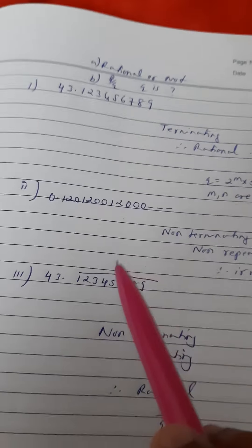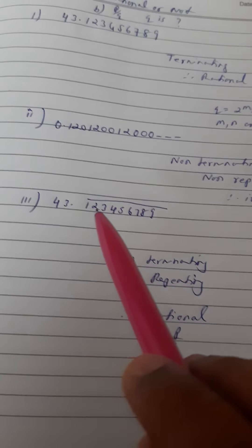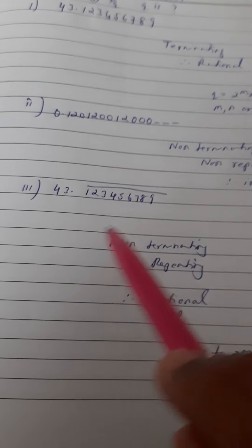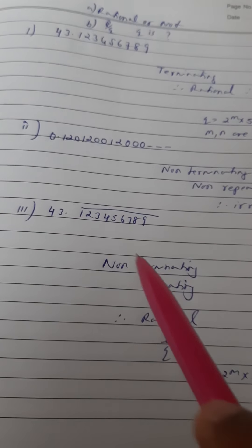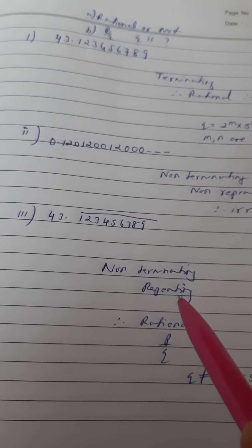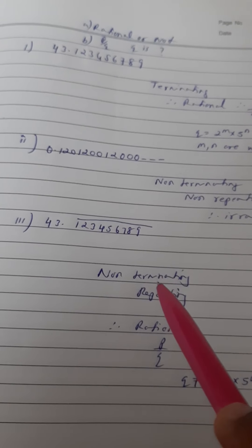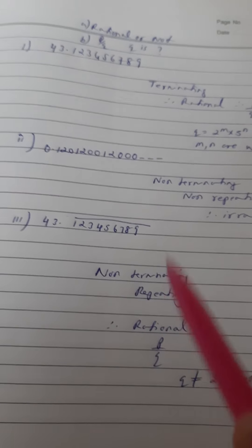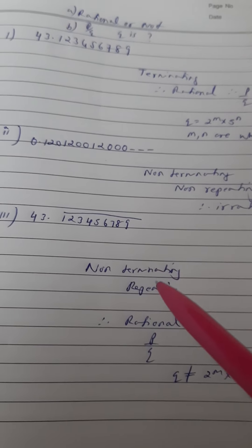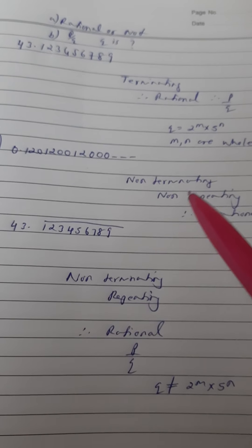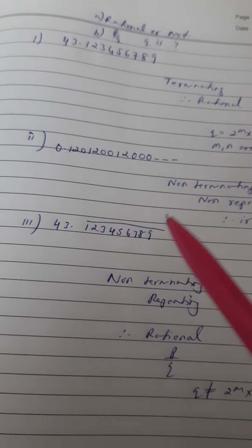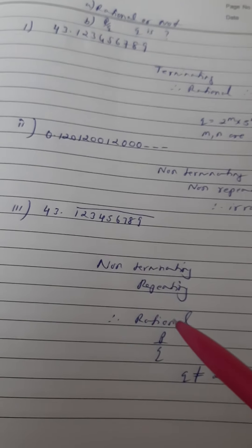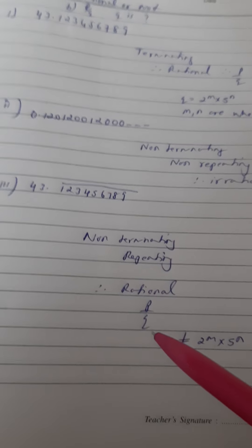The last part: 43.123456789 with a bar on top. This is a non-terminating number because the digits keep repeating in a loop an infinite number of times — that is why there is a bar. Therefore it is a non-terminating repeating or recurring number. Such numbers are also rational, since rational numbers can be either terminating or non-terminating repeating. So this number is a rational number and can be expressed in the form p/q.